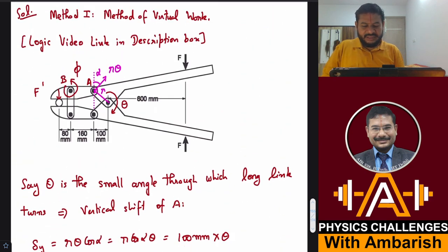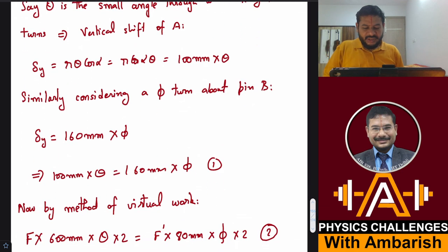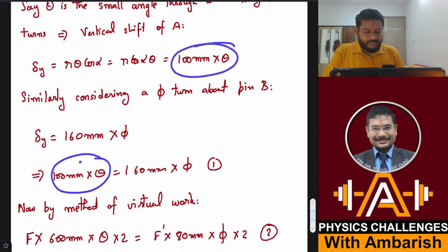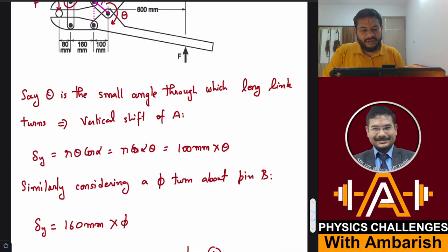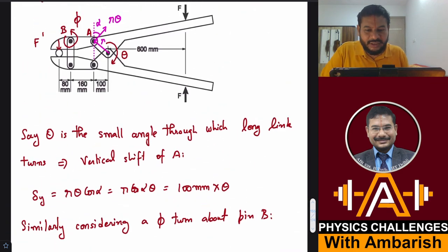This is 160 and this turns through angle phi, so 160 times phi is also the vertical displacement of A. Now these two displacements must be equal because they are vertical displacements of pin A only. So 100 mm times theta should equal 160 mm times phi.